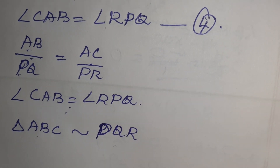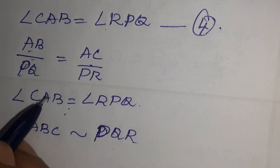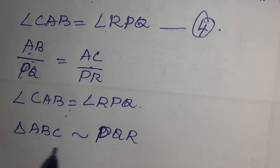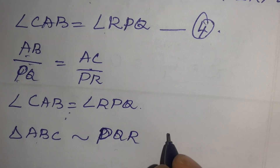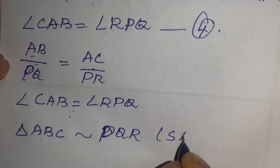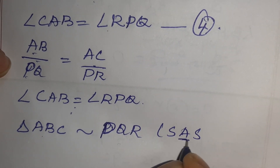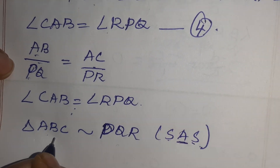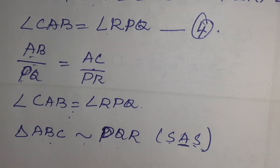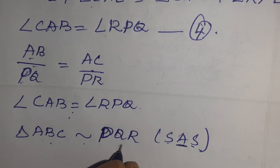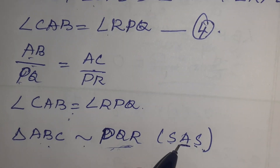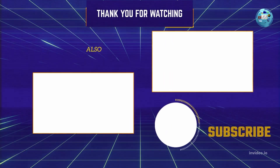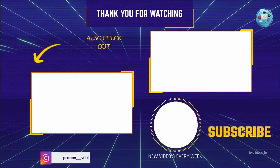From condition 1, we have AB by PQ equal to AC by PR, and from condition 4, angle CAB equal to angle RPQ. Therefore, by SAS criterion — that is, two sides proportional and the included angle equal — triangle ABC is similar to triangle PQR. That is what we had to prove.